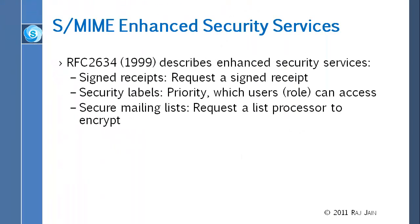There are also enhanced security services in S-MIME. Basically, you can do a few more things — if you go into Outlook, you can get a signed receipt and set a priority. For secure mailing lists, somebody has to generate a separate key for everybody else and send them the key, so group broadcast can be done that way. That's about all there is to S-MIME.